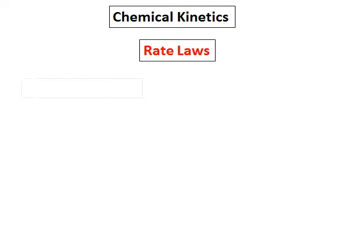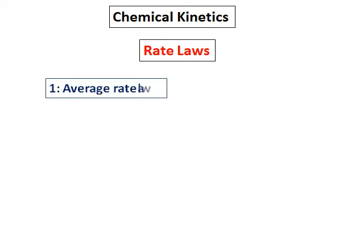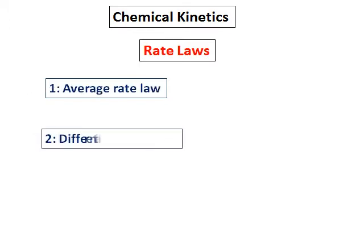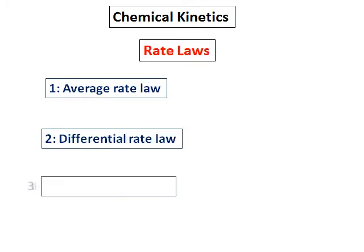We will learn about rate laws in chemical kinetics. There are three kinds of rate laws. The first one is the average rate law. The second one is the differential rate law. And the third one is the integrated rate law.